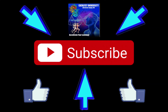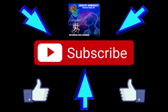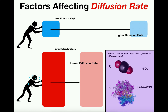Welcome back to Catalyst University. My name is Kevin Tokov. Please make sure to like this video and subscribe to my channel for future videos and notifications. In this video, we're going to discuss four factors that affect the rate of diffusion, or as we'll call it now, diffusion rate — just how fast diffusion occurs.